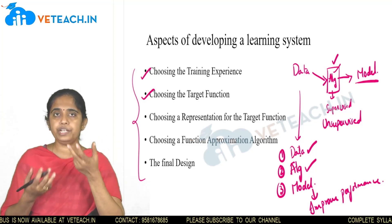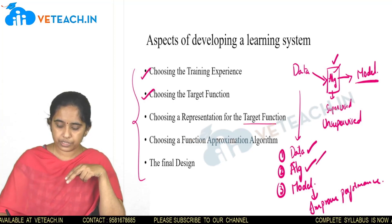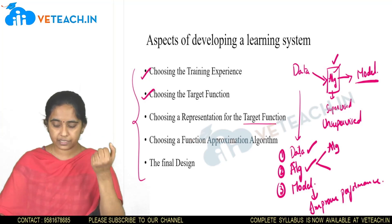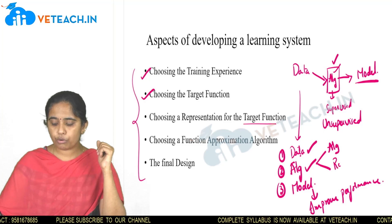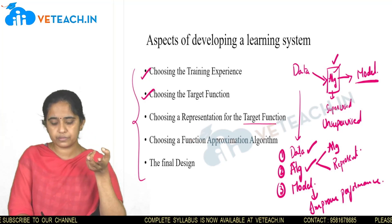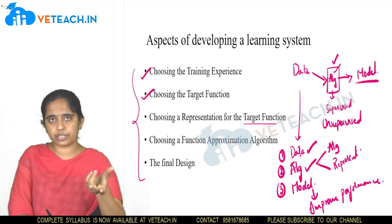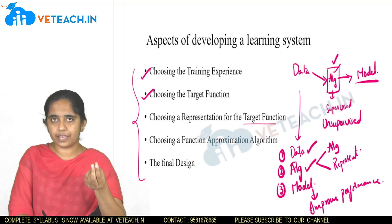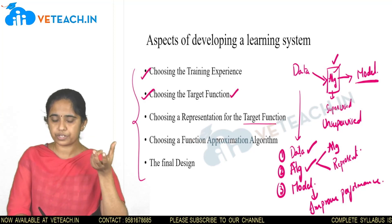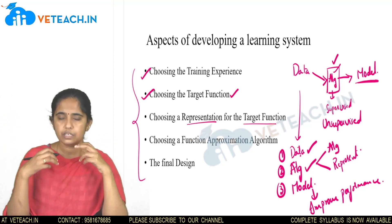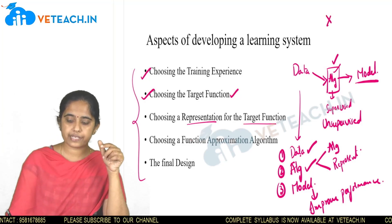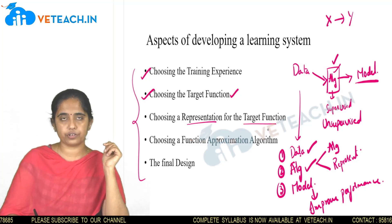Once the algorithm is chosen based on the data, we need to know how to represent that target function. Choosing a representation means: if you take a decision tree algorithm, the representation will be in the form of a tree; for linear regression, it will be a line; for clustering, it will be groups or clusters; and for association rule mining, the representation will be a rule such as X implies Y.